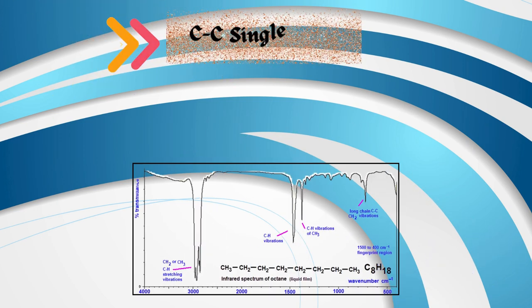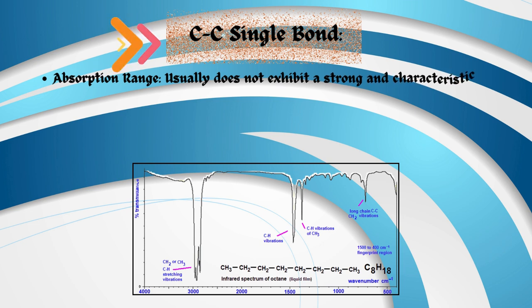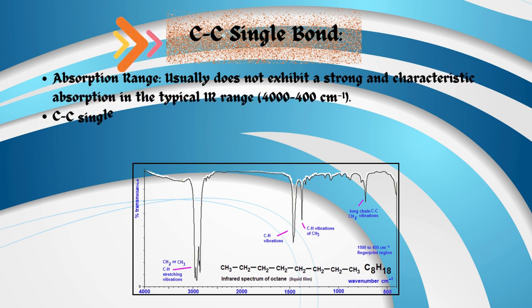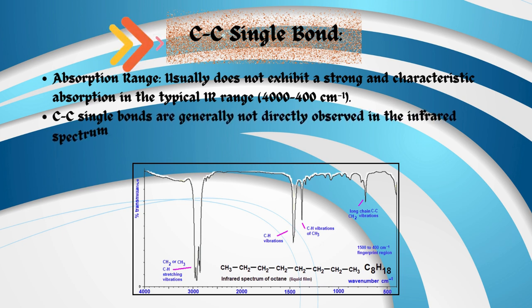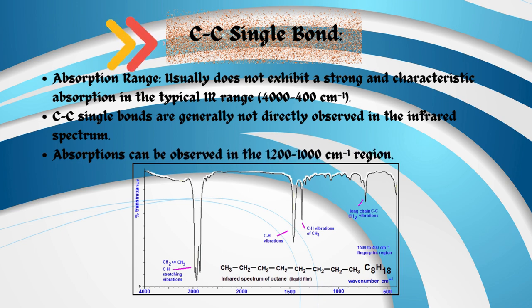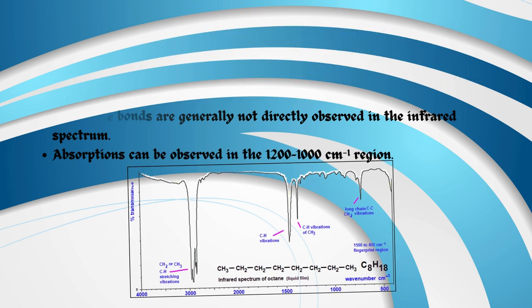Carbon-carbon CC single bond. Absorption range: usually does not exhibit a strong and characteristic absorption in the typical IR range 4,000 to 400 per centimeter. Carbon-carbon single bonds are generally not directly observed in the infrared spectrum. Absorptions can be observed in the 1,200 to 1,000 per centimeter region.